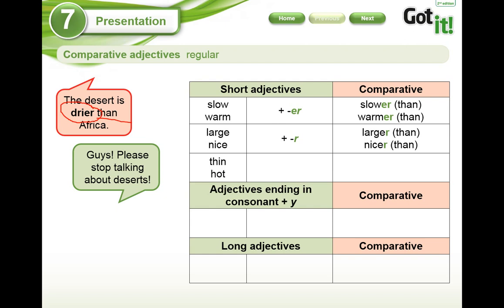We have 'thin' and 'hot.' What happens here? We see consonant, vowel, and consonant — the CVC pattern. We have to duplicate the last consonant and add -e, -r. Double the consonant. For example: 'finer than' — the teacher is finer than Jorge, because the teacher is slim and Jorge is not slim.